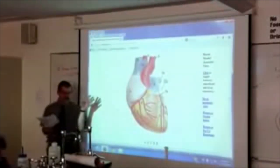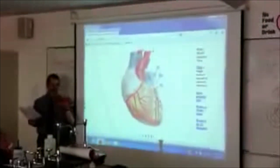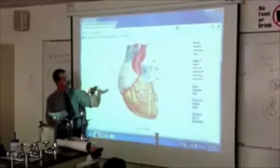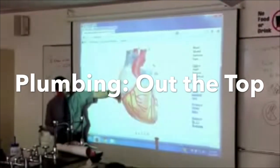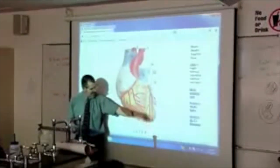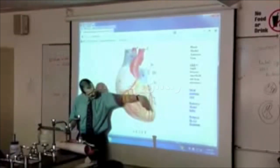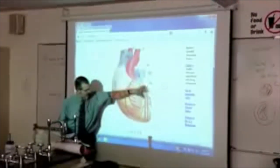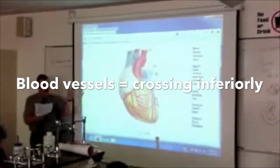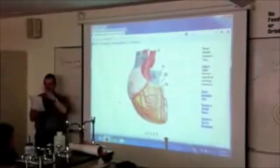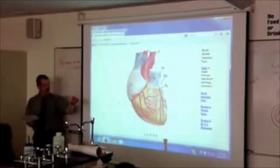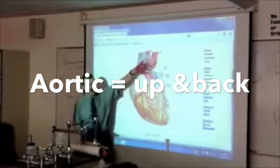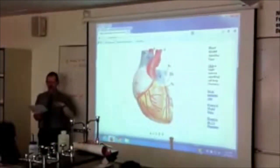What you want to do is visualize this picture — this is what a normal heart looks like in a patient. This is a patient's right, a patient's left. A couple little tricks: the plumbing comes out the top. If you look at the apex, it tends to point a little to the left. You want to look at these blood vessels and see how they cross. The apex tends to point to the left; a red thing this way, the aortic kind of goes up and back. If you get it wrong, you're doomed.